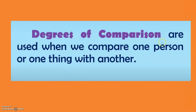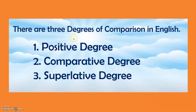First, let us see what degrees of comparison are. When we talk about degrees of comparison, they are used when we compare. The very word comparison means compare — when you compare one person or one thing with another. So we have degrees of comparison. How many degrees? Positive degree, comparative degree and superlative degree.